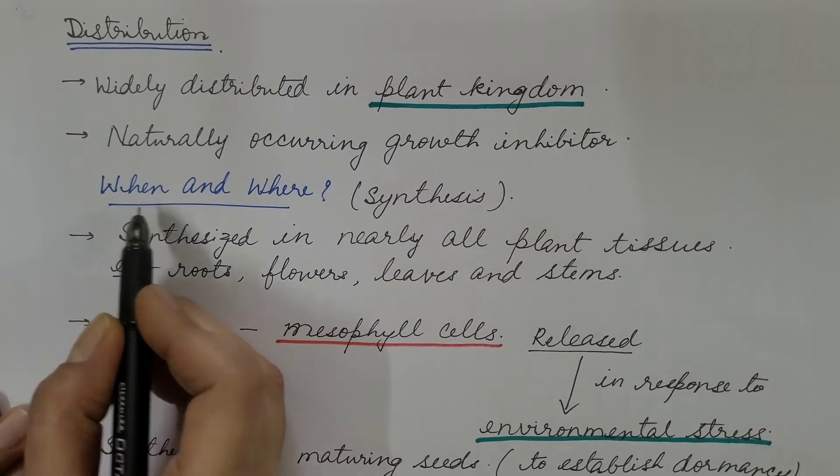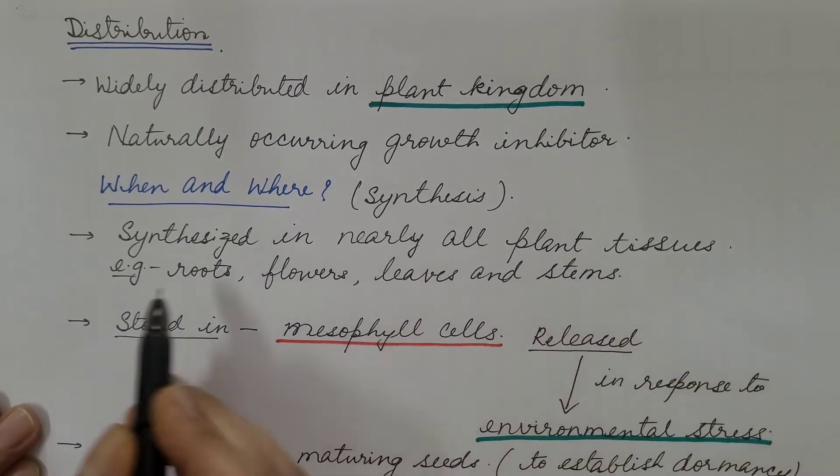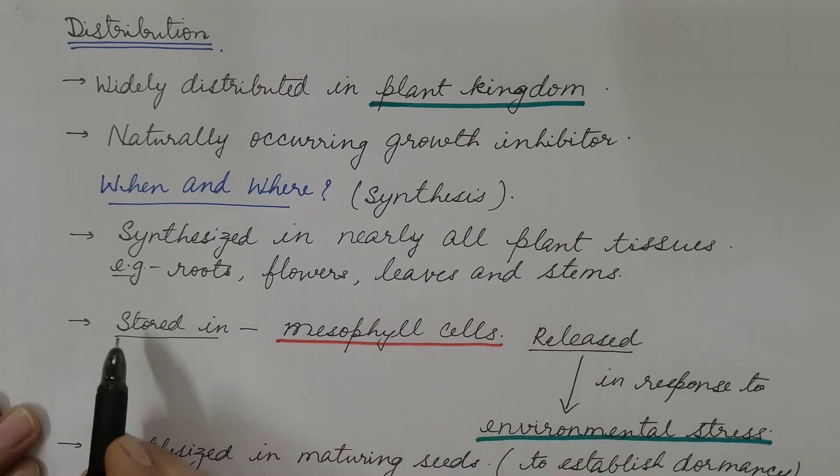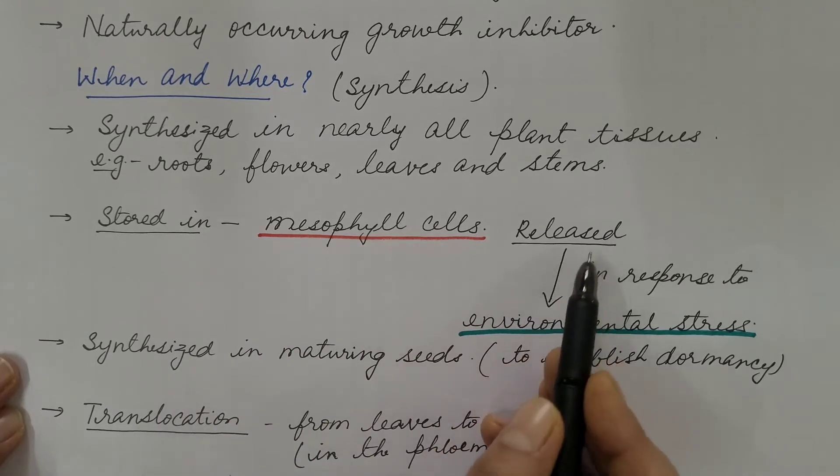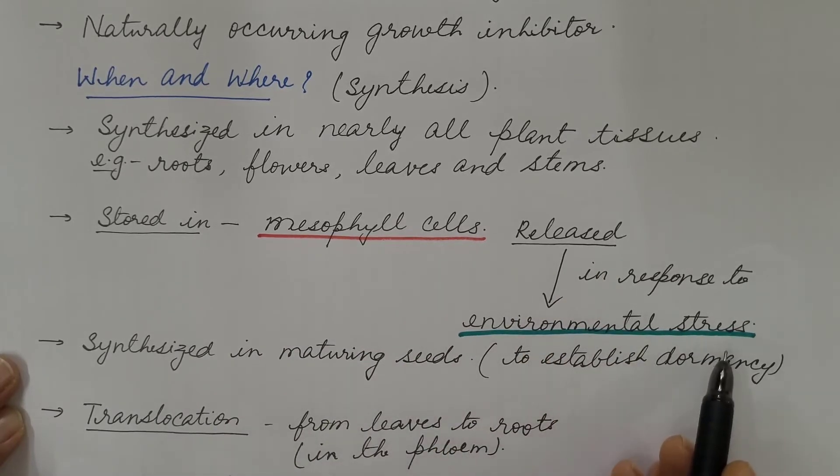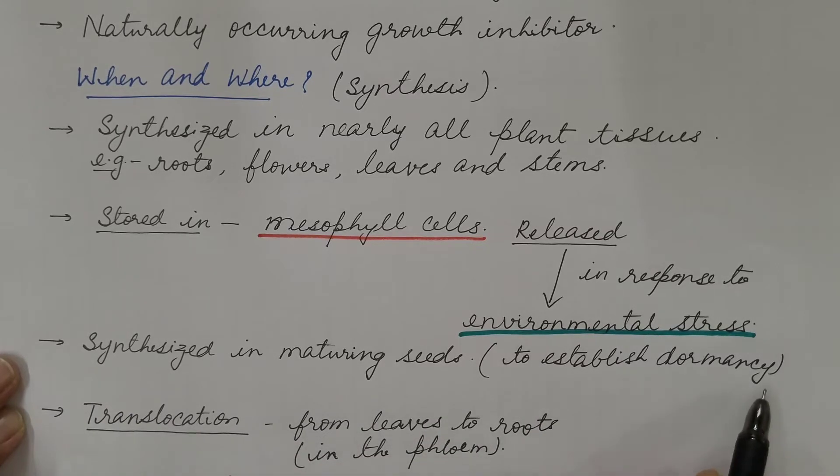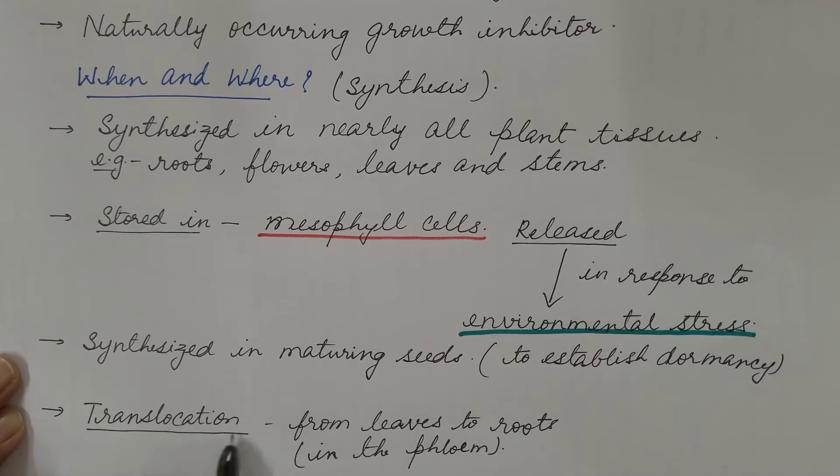When and where it is synthesized: It is synthesized in nearly all plant tissues, for example roots, flowers, leaves, and stems. It is stored in mesophyll cells and released in response to environmental stress. It is synthesized in maturing seeds in order to establish dormancy during unfavorable conditions. It is translocated from leaves to roots via phloem.